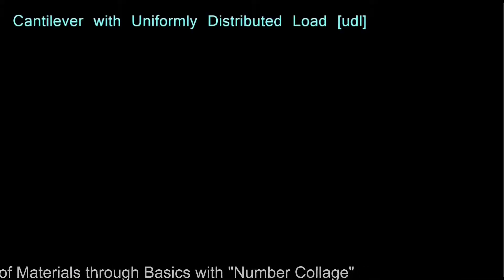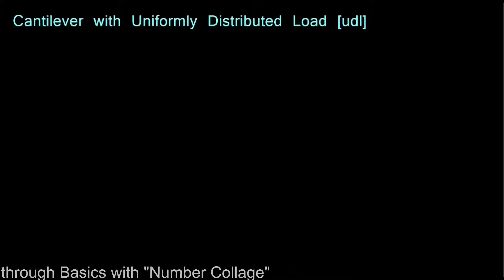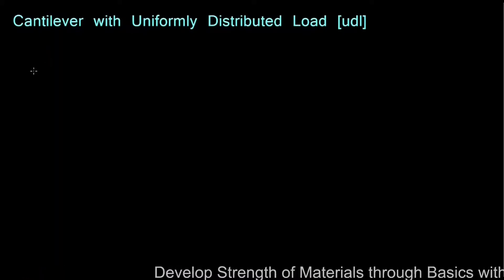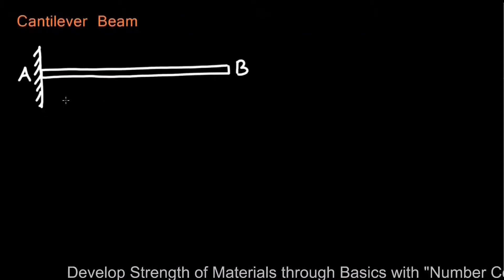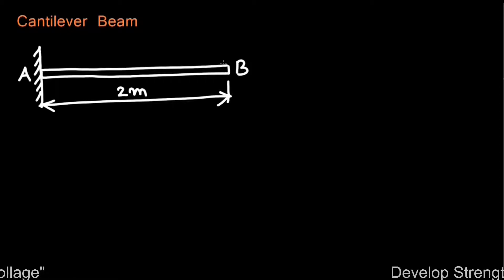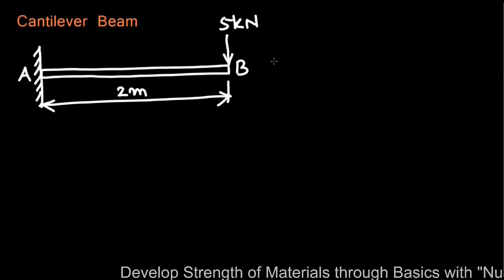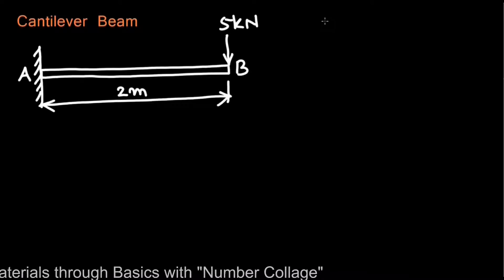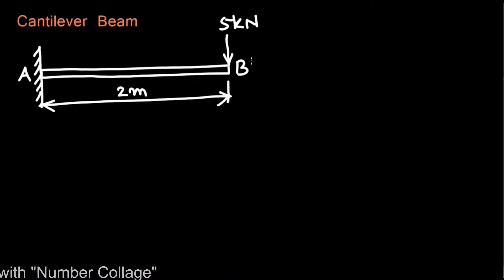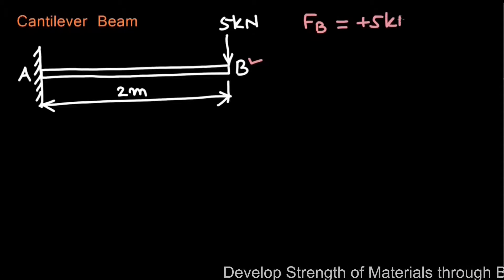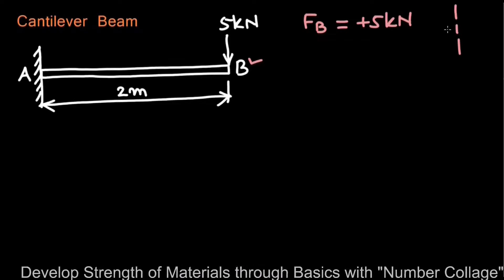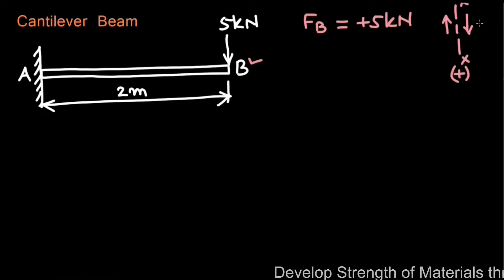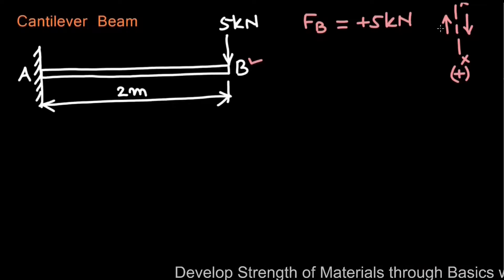Now we will consider a numerical example. A cantilever beam AB of span 2 meters carries a point load of 5 kN at its free end B. We have to draw the shear force and bending moment diagrams. The shear force at point B, FB, will be +5 kN according to the sign convention, where there is a downward force to the right of the section and upward force to the left.